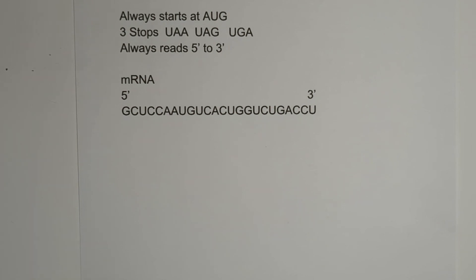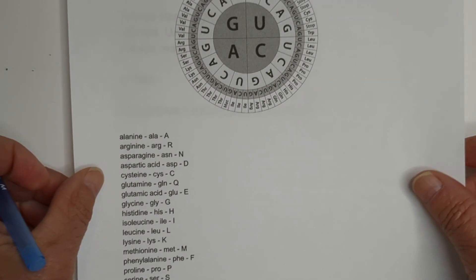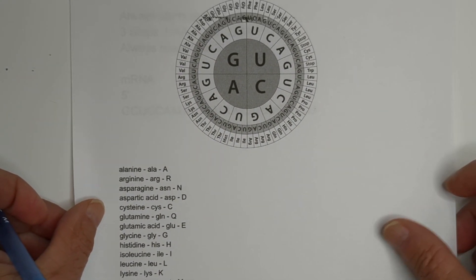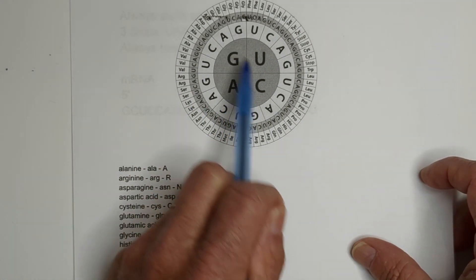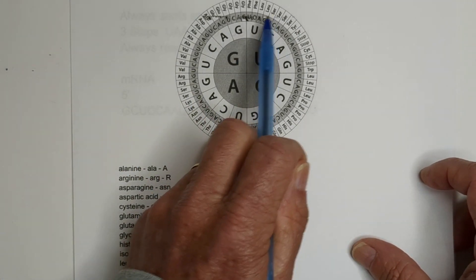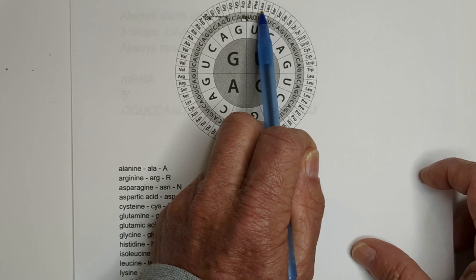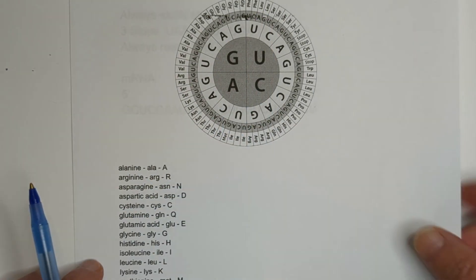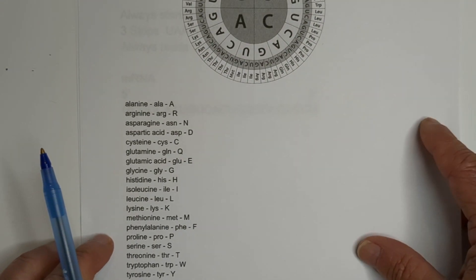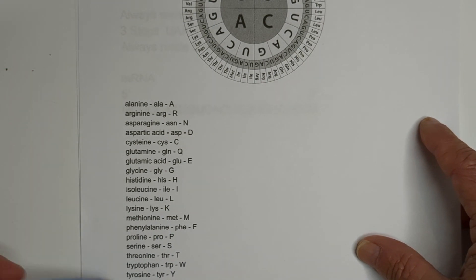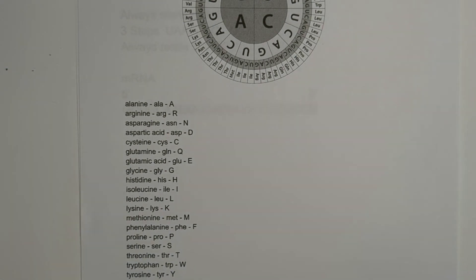So let's get started with this first one, and you will need a chart like this, and let me explain what this is. Basically, it has the codons, remember you read in triplets, and then it gives you a short abbreviation, and then I have this list of amino acids that go along with this.